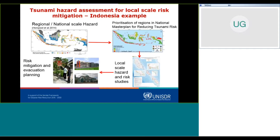This is an example from Geosciences Australia in collaboration with the Indonesian government, where they have done a national-scale probabilistic hazard study. This hazard study is used to prioritize regions in the national master plans for reducing tsunami risk, then constructing a number of local inundation maps. These maps are then used to design risk mitigation and evacuation planning maps for cities that are highly exposed to tsunamis.